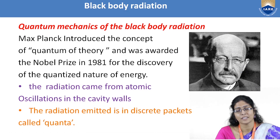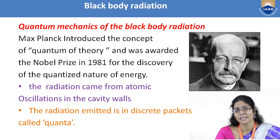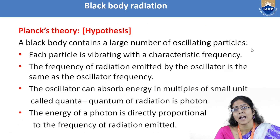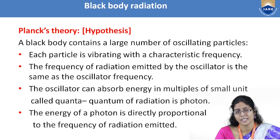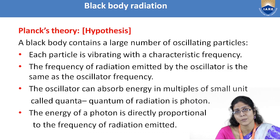Physicists were unable to solve the ultraviolet catastrophe, and then came Max Planck. He introduced the concept of quantum theory, for which he was awarded the Nobel Prize for the discovery of the quantized nature of energy. He proposed that radiation comes out from atomic oscillations in the cavity walls, and that the radiation emitted from these oscillators is released in discrete packets of energy, which he named quanta. He proposed the black body as containing a large number of oscillating particles, each vibrating particle having its own characteristic frequency. The frequency of radiation emitted by the oscillator is the same as the oscillator's own frequency.